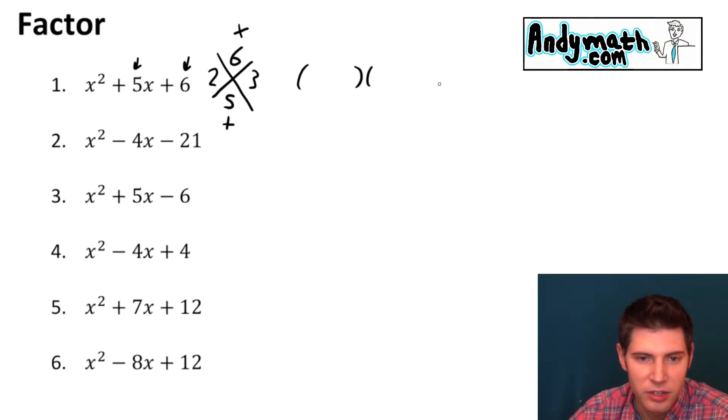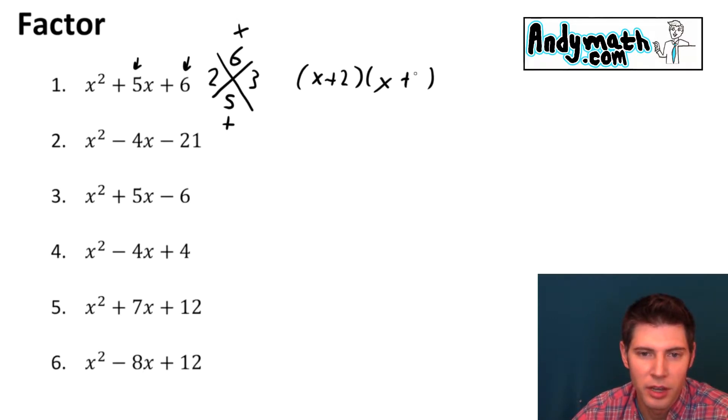So then this gets turned into two parentheses. x and x and we do our x plus 2 and our x plus 3. And now we're done. We factored it and that's it. That's how we're going to do all of these.